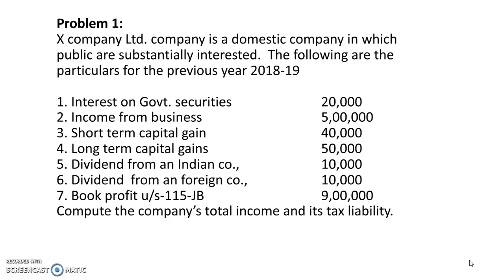Let's understand the classification of each item. Interest on government securities of 20,000 is taken under income from other sources. Income from business is taken directly under the business head, as no profit and loss account adjustments are given. Short-term capital gain and long-term capital gain go under the capital gains head. Dividend from Indian company and dividend from foreign company are taken under income from other sources.